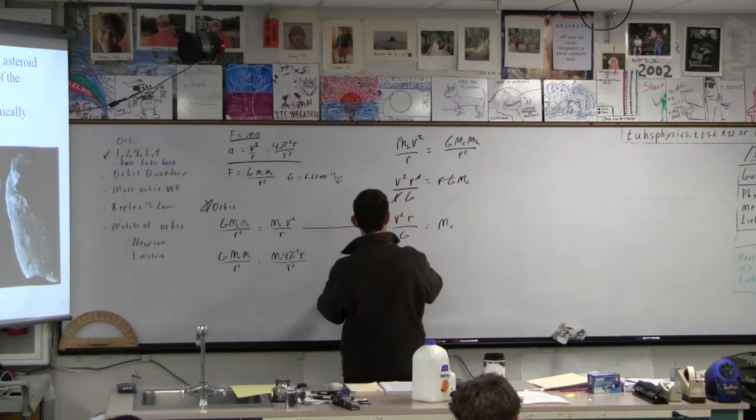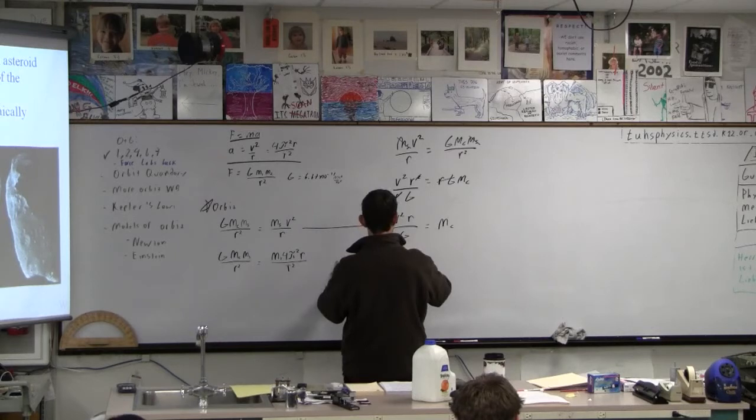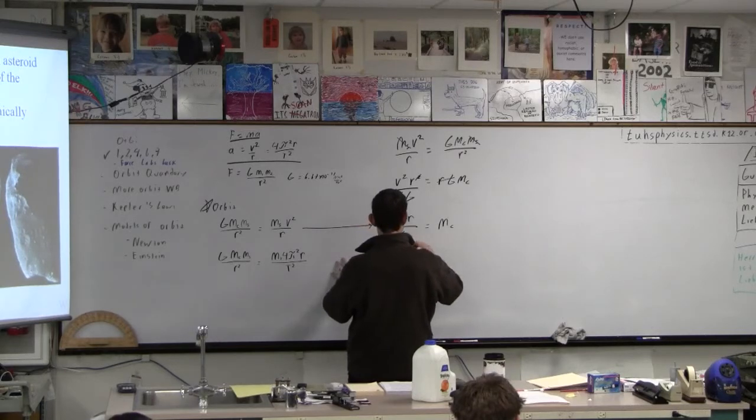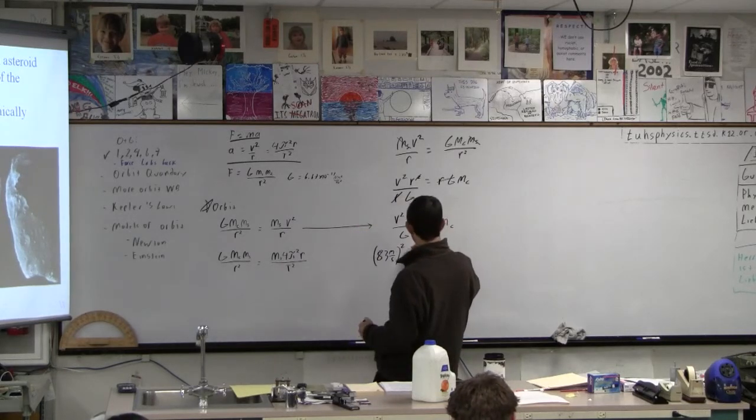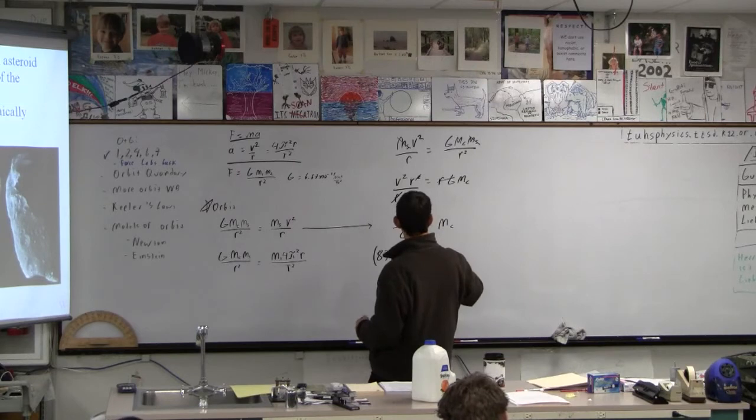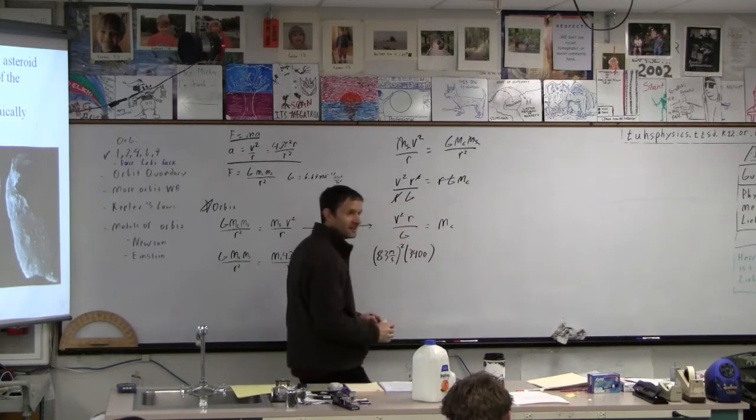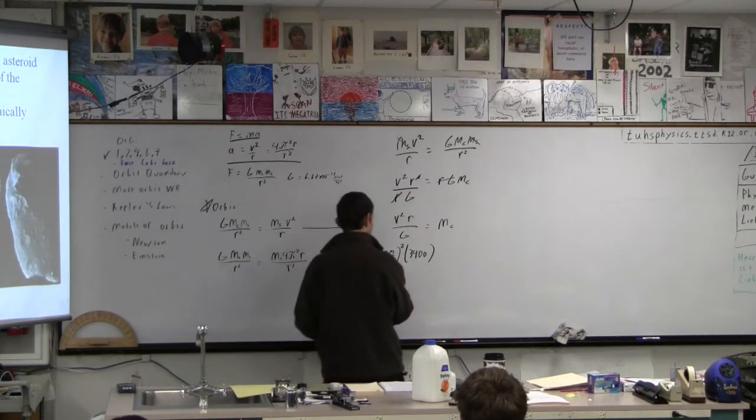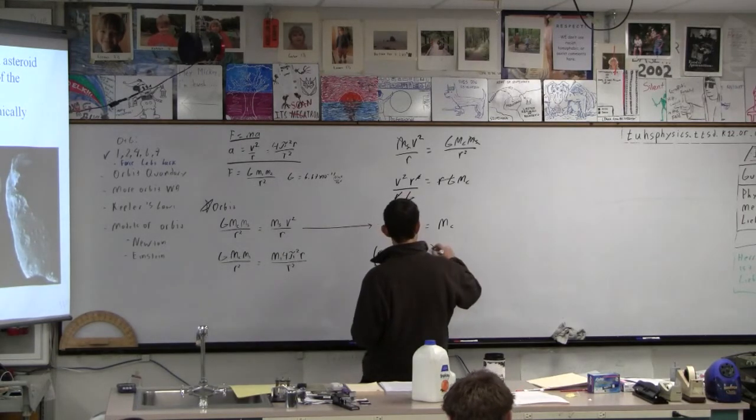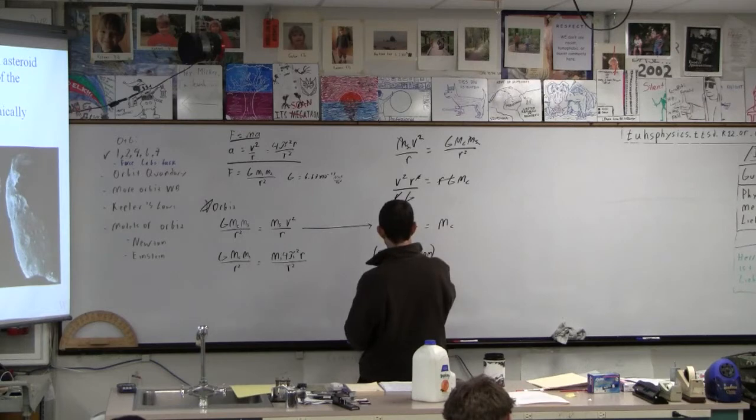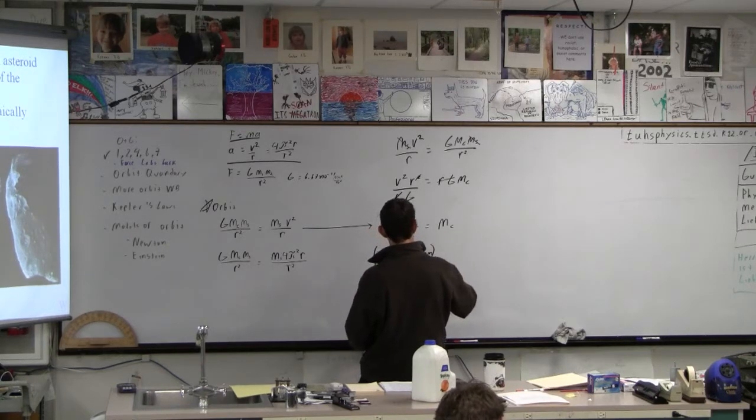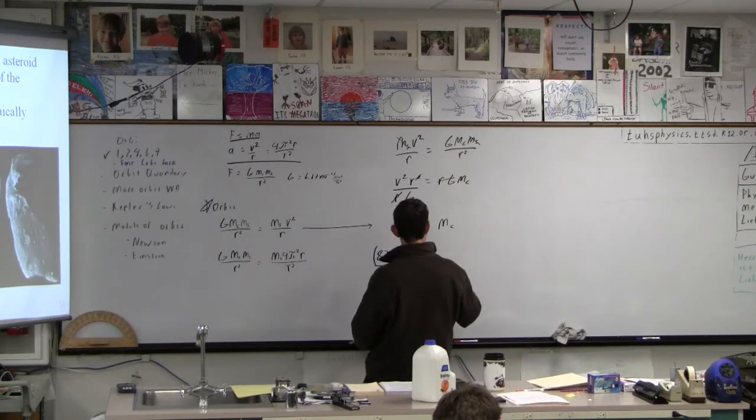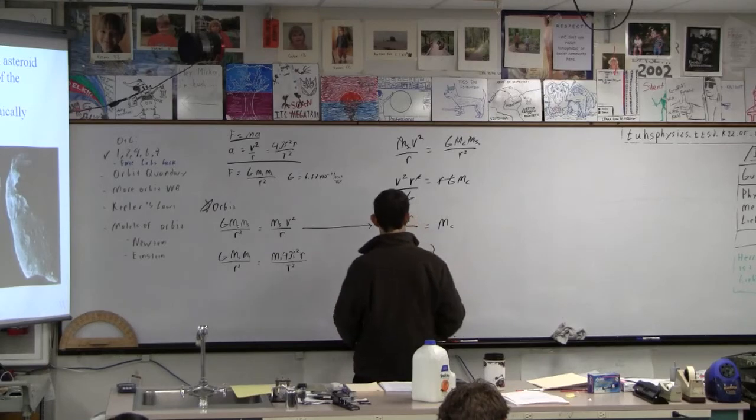So now we can plug in our numbers. 83 meters per second squared times 3,400 meters. So if you were off by like a power of 10, right, like a thousand, whoops, there's a factor of a thousand right there. And this is meters, and then this is 6.67 times 10 to the minus 11th newton meters squared.